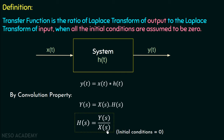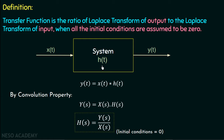We can also notice that H(s) is the Laplace transform of h(t). So the transfer function for any LTI system is the Laplace transform of the impulse response of that LTI system. If we are given the transfer function of an LTI system and asked to calculate the impulse response, we can calculate it easily by taking the inverse Laplace transform of H(s). We are going to solve many such questions in the upcoming lectures.